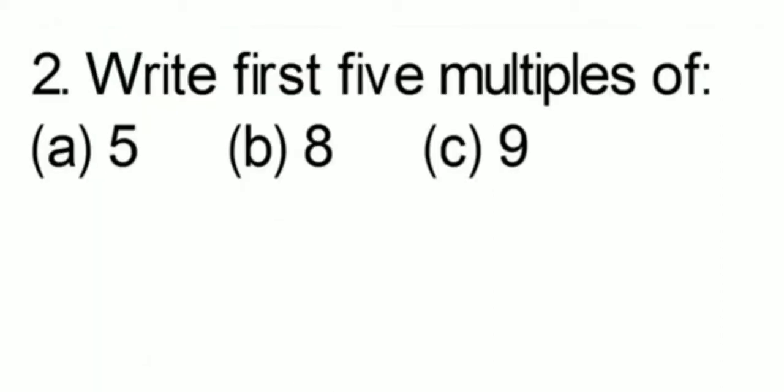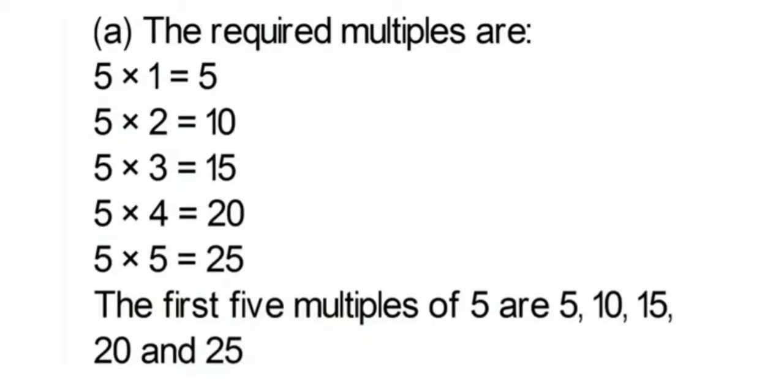Now come to question number 2: write the first 5 multiples of 5, 8 and 9. For 5: 5 into 1 is 5, 5 into 2 is 10, 5 into 3 is 15, 5 into 4 is 20, 5 into 5 is 25. So the first 5 multiples of 5 are 5, 10, 15, 20 and 25.